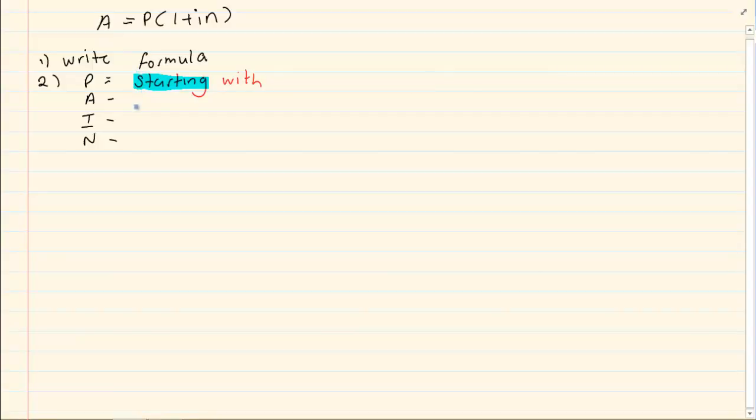A is your end amount. How much money are you ending up with? Altogether, when you started till the end, after all the changes and adjustments, how much do you have?